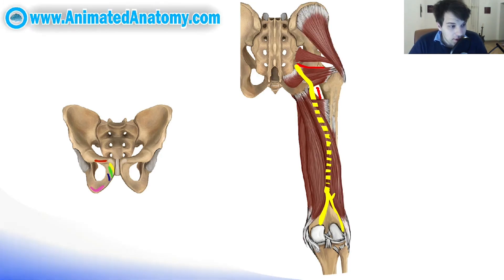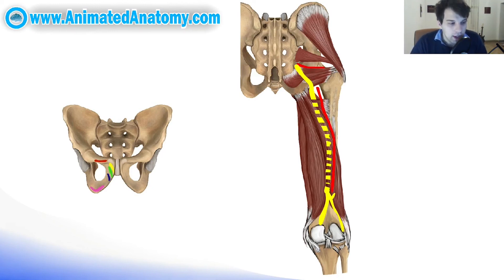Of course the nerve runs under the long head of the biceps femoris, because it would be really easy to damage it if it ran superficially.